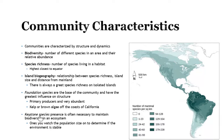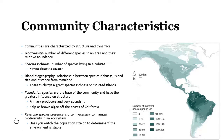Keystone species are those whose presence is often necessary to maintain biodiversity — wolves are a good example. When you start to see keystone species disappear, it's a big indicator that something is affecting a population in one area. One type we really keep track of is amphibians, because they are so reliant on water and are a good indicator species for noticing when environments are changing.